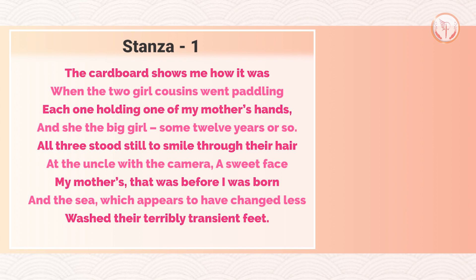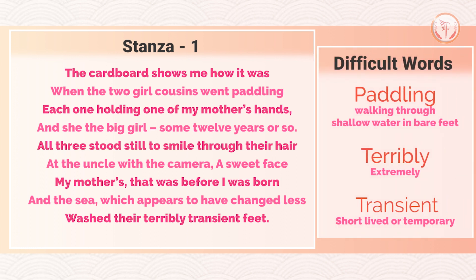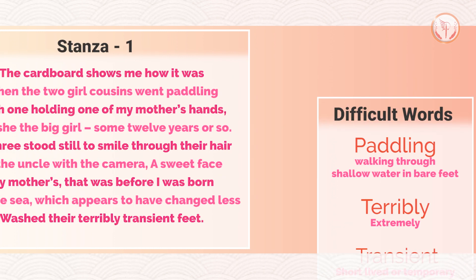The difficult words in this stanza are: first, 'paddling', which means walking through shallow waters in bare feet; second, 'terribly', which means extremely; and the last one is 'transient', which means short-lived or temporary.